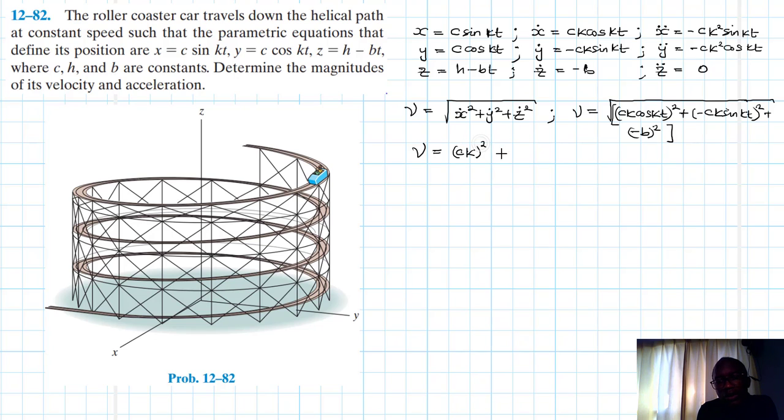times cos kt squared plus sin² kt. This one is equal to one, okay? So it disappears. We just remain with this, then we have plus b².